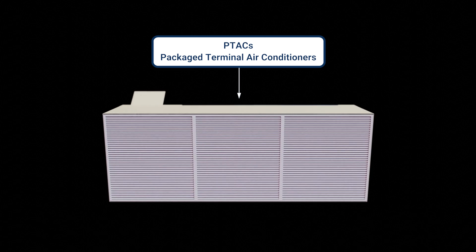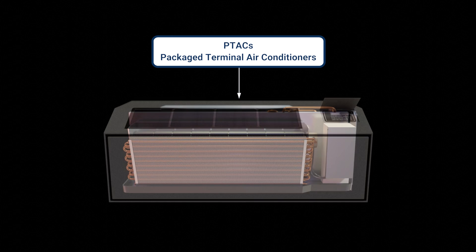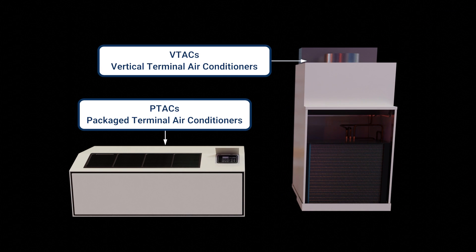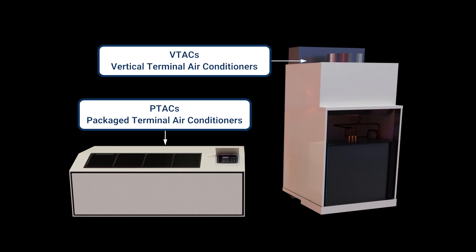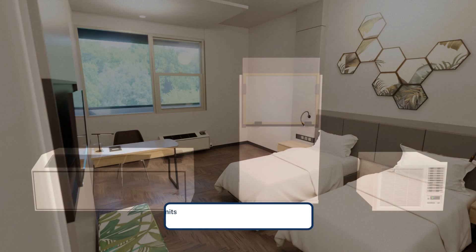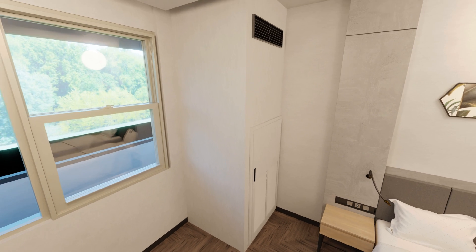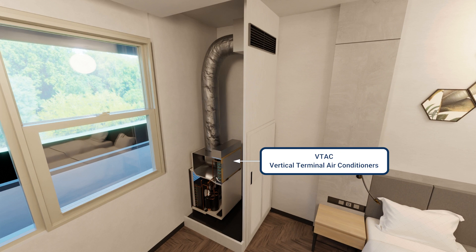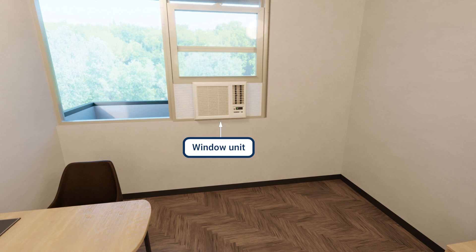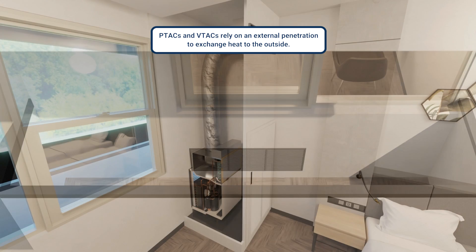PTACs, or Packaged Terminal Air Conditioners, and VTACs, Vertical Terminal Air Conditioners, as well as window units, are self-contained units often used in hotels or apartments. These are compact air conditioners, often with lower efficiency than other options. Window units are installed in windows, serving single rooms. PTACs and VTACs don't rely on the window, but they do rely on an external penetration to exchange heat to the outside.